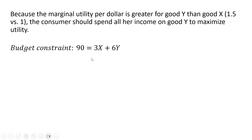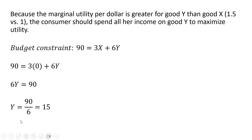Using the budget constraint, we set X equal to 0 — the consumer is not going to buy any units of good X. Solving for Y, dividing 90 by 6, Y equals 15. The consumer will not buy any units of good X since good Y is always the better deal. So the utility maximizing consumption bundle is Y equals 15, X equals 0.